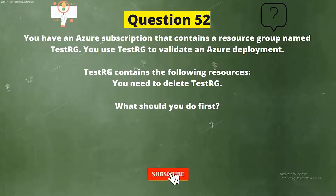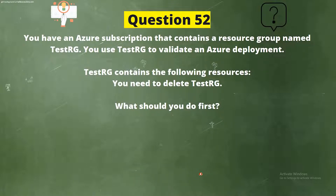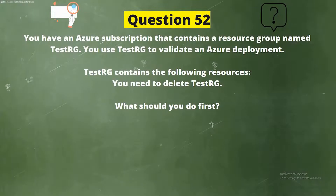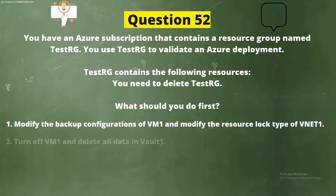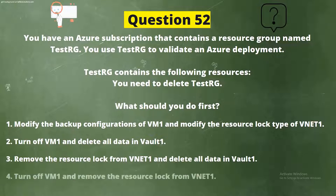Next question. You have an Azure subscription that contains a resource group named TestRG. You use TestRG to validate an Azure deployment. TestRG contains the following resources. You need to delete TestRG. What should you do first? Options: Option 1, modify the backup configuration of VM1 and modify the resource log type of VNet1; Option 2, turn off VM1 and delete all data in Vault1; Option 3, remove the resource log from VNet1 and delete all data in Vault1; Option 4, turn off VM1 and remove the resource log from VNet1.